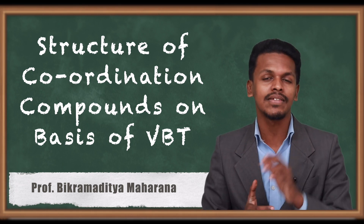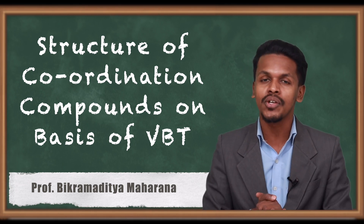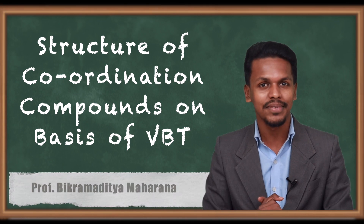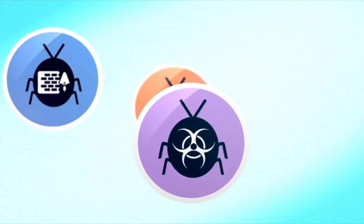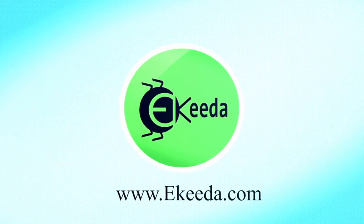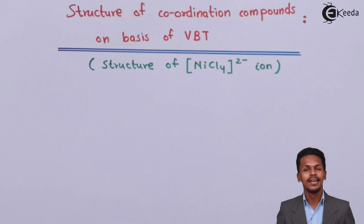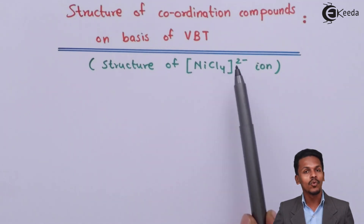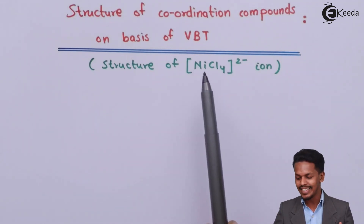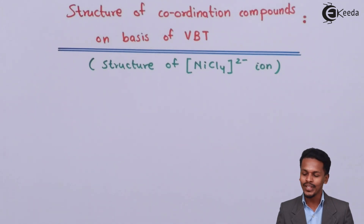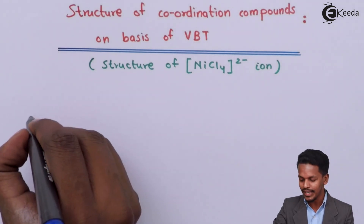Starting with the first one — let us understand the structure of the complex NiCl₄. Here we are going to talk about the structure of NiCl₄, where nickel is the central metal atom. So let us understand the electronic configuration for that.